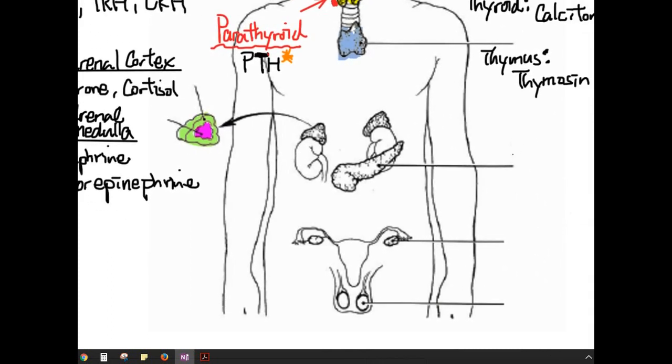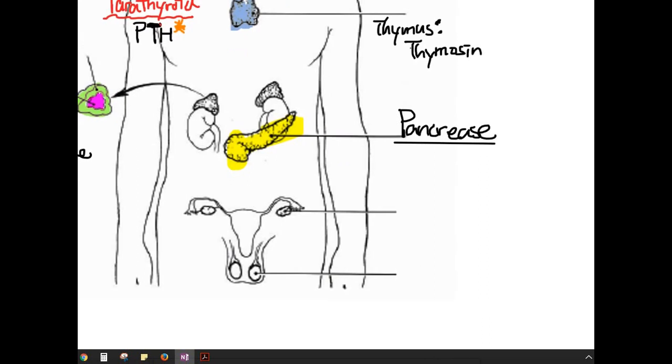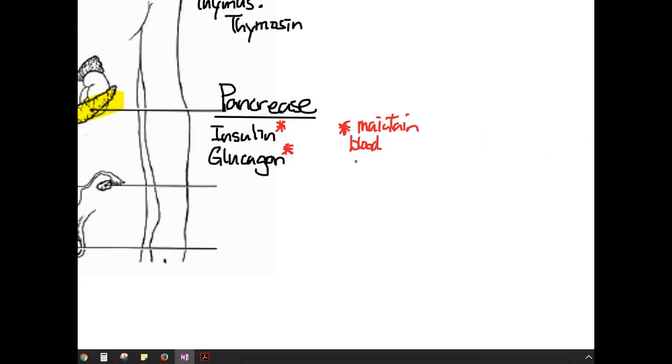Next, we have the pancreas. The pancreas is located right here. And the pancreas is special because it is both exocrine and endocrine. It's exocrine gland because it secretes pancreatic juice through the duct into your duodenum. It's endocrine because it produces insulin and glucagon, and this goes directly into the bloodstream. So that's why the pancreas is also an endocrine gland. There is also something called somatostatin in the lecture notes, but I said you don't have to know it for this course. We'll focus on insulin and glucagon. The insulin and glucagon deserve another star. So this star means insulin and glucagons are antagonistic pairs.